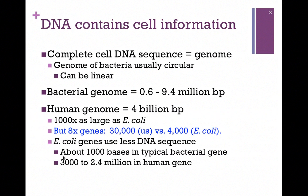Genomes also vary considerably in terms of their size. We refer to size in the number of base pairs — that is, the number of nucleotide base pairs within the DNA molecule. The bacterial genome is anywhere from half a million to ten million base pairs, depending on the bacteria. The human genome is actually four billion base pairs, three orders of magnitude larger than, say, E. coli. But that doesn't mean we have a thousand times the number of genes.